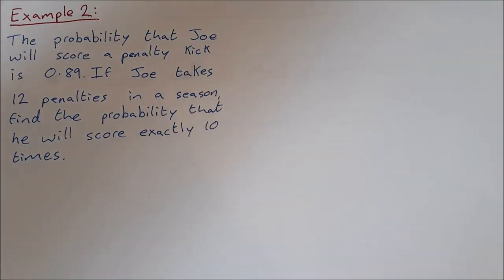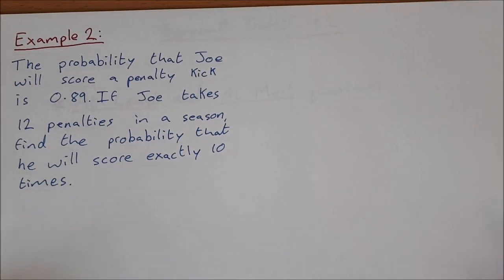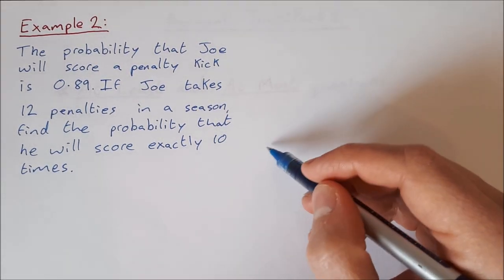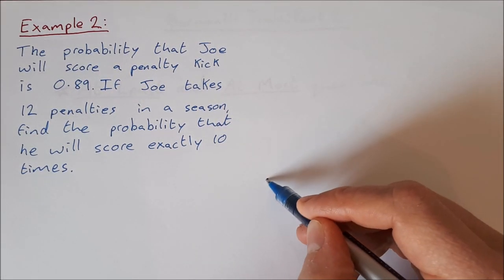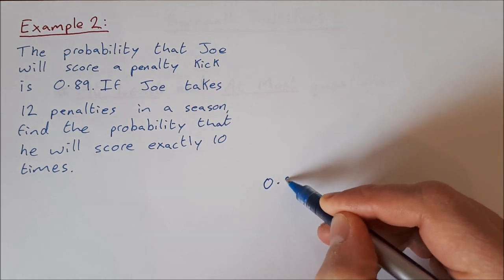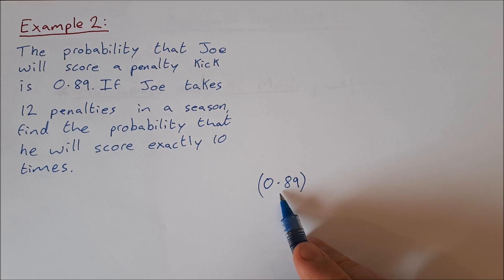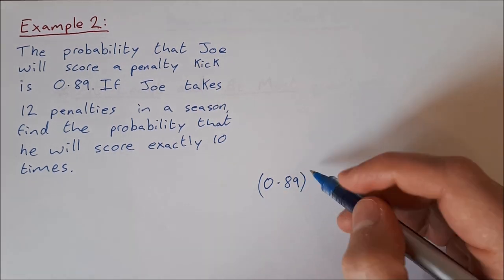Okay, let's have a look at another example here. So example two, the probability that Joe will score a penalty kick is 0.89. If Joe takes 12 penalties in a season, find the probability that he will score exactly 10 times. Okay, so what do we want? We want him to score. What's the probability of scoring? The probability of scoring is 0.89. How many times do we want him to score? We want him to score 10 times.